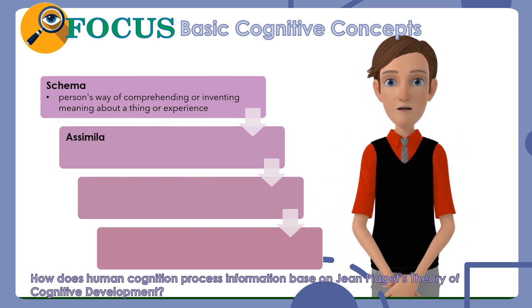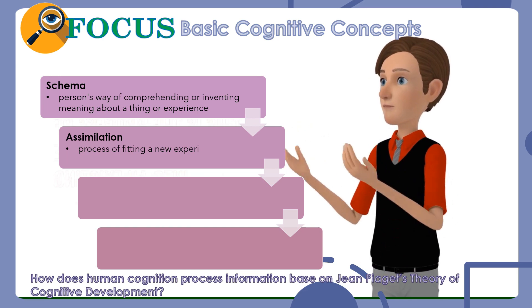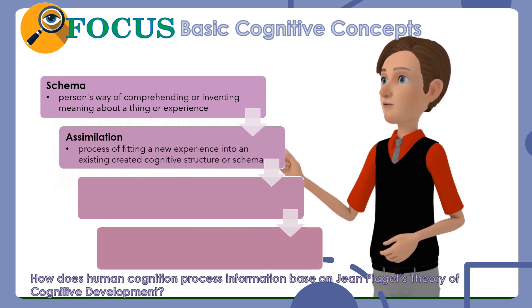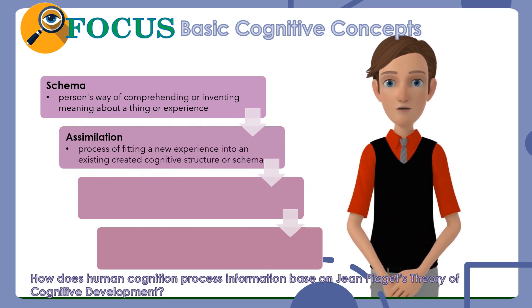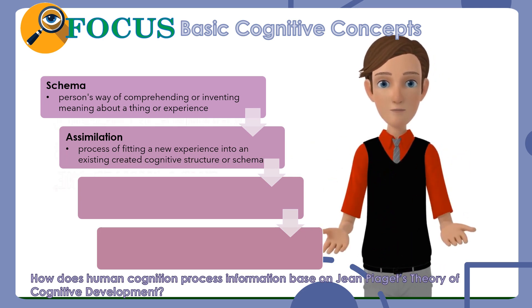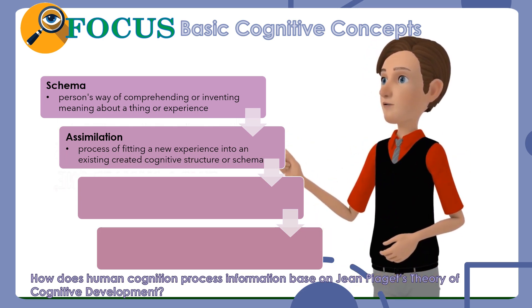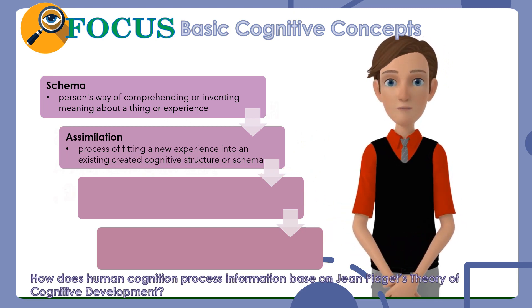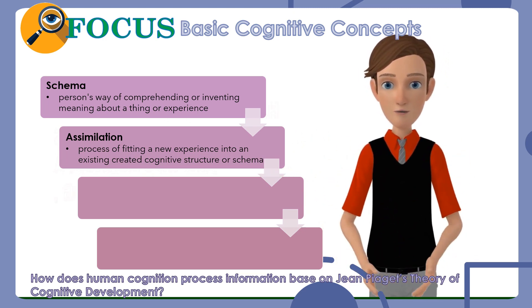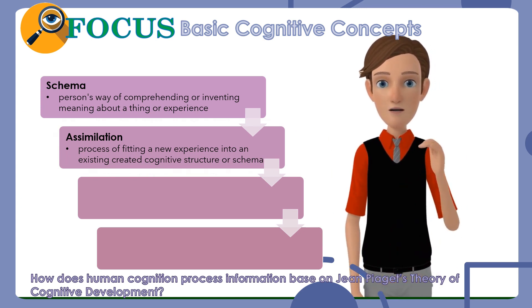Assimilation: This is the process of fitting a new experience into an existing or previously created cognitive structure or schema. For example, if the child sees another dog, this time a smaller one, he makes sense of what he sees by adding this new information — a different looking dog — into his existing schema of a dog.